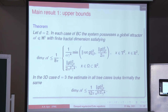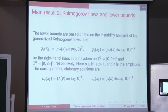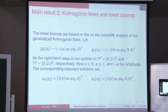The second part of the main result says that in case of the torus, both in two dimensions and in three dimensions, this estimate is sharp as alpha goes to zero. The lower bounds are based on the instability analysis of the generalized Kolmogorov flows.